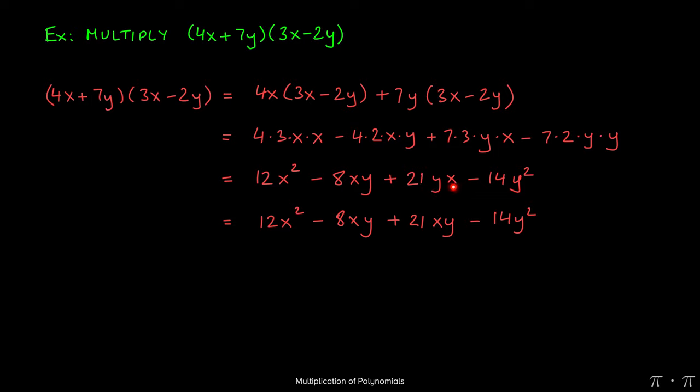And if we combine like terms here, we're going to end up with 12x squared which comes along as it is, the negative 14y squared comes along as it is, but negative 8xy and the 21xy add together to give us 13xy.